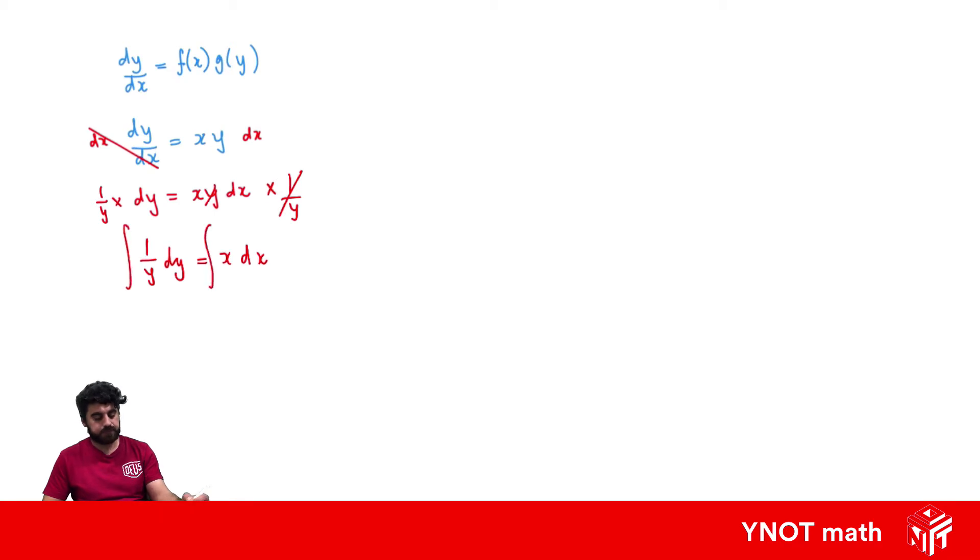That's what we're going to do. So the integral of 1 over y dy is just ln of the absolute value of y, and the integral of x with respect to x is x squared over 2 plus a constant.